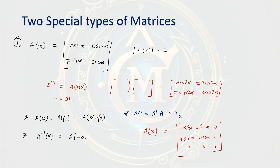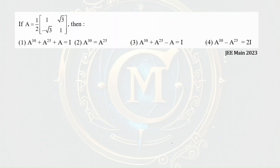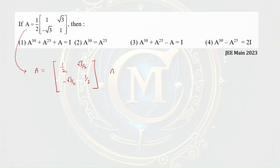Now, how to apply this in problem solving? This question was asked in JEE Main 2023. If we observe this matrix carefully, we can see that it can be written as: one-half, root 3 over 2, minus root 3 over 2, one-half. So A can be written as A of pi by 3.